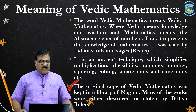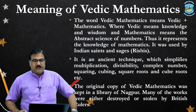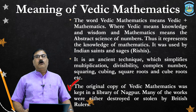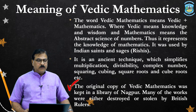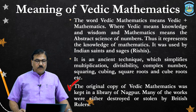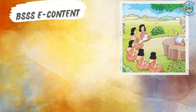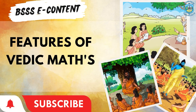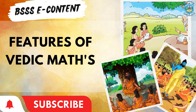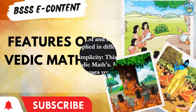The original copy of Vedic mathematics was kept in a library in Nagpur. Many of the works were either destroyed or stolen by British rulers.